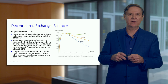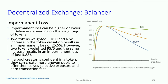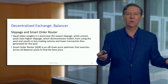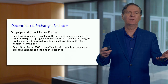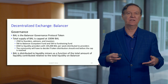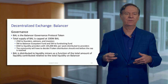Impermanent loss is also an issue. In the Balancer paper referenced at the bottom, they look at different weightings and determine how these weights contribute to impermanent loss. Overall this is a good idea. There is slippage as with any automated market maker, and there are order routers like with Uniswap. All of this is part of the growing interest in decentralized exchange and making it as efficient as possible.